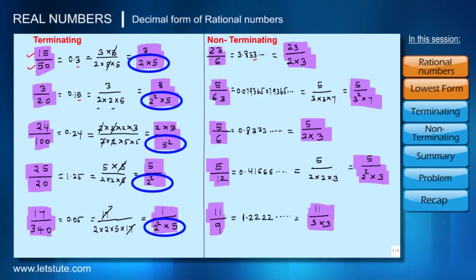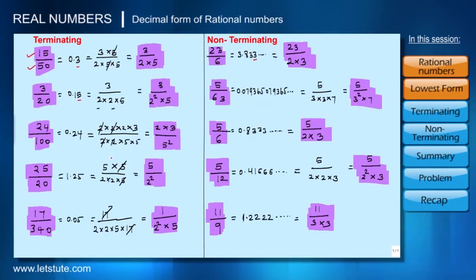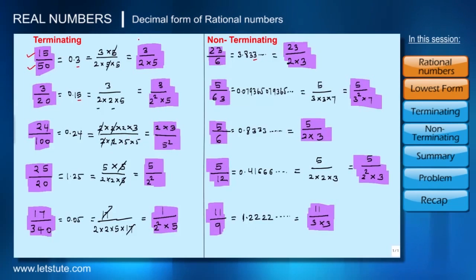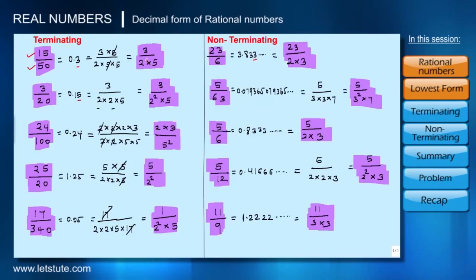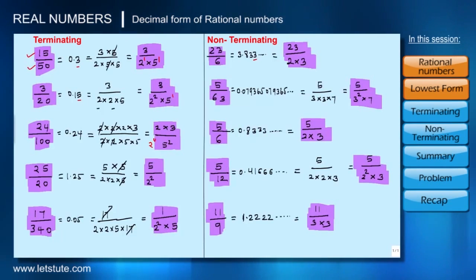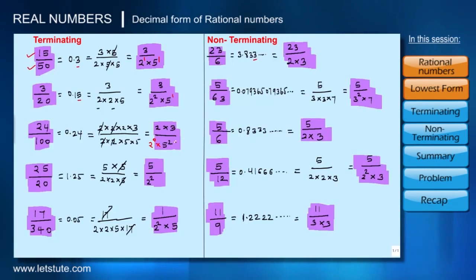Notice that the denominators of the fractions that terminate contain only 2, 5, or the product of 2 and 5 with some powers. The base is always 2 and 5, and only the powers vary. For the first terminating fraction, the denominator has 2¹ × 5¹. Where only 5 appears, we can write 2⁰ alongside it — since any number raised to 0 equals 1 — giving 2⁰ × 5².